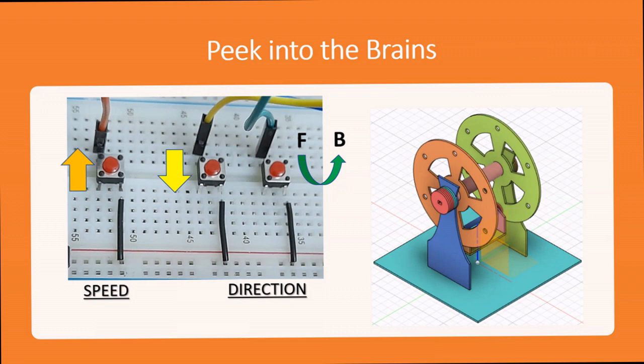Let's peek into the brains of this project. As you can see, there are three tactile switches. The first tactile switch is for increasing the speed. The second one decreases the speed and the third tactile switch is used for conveying to the Arduino to flip the direction from forward to backward and vice versa.